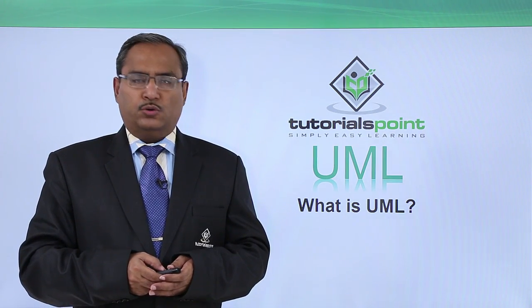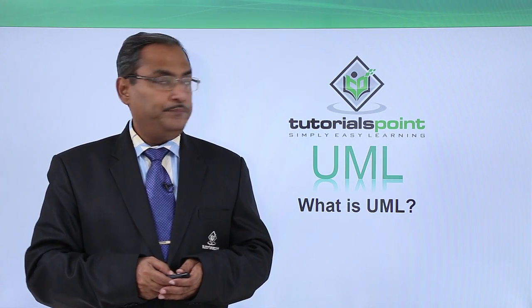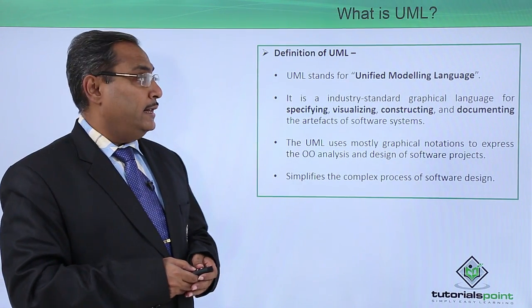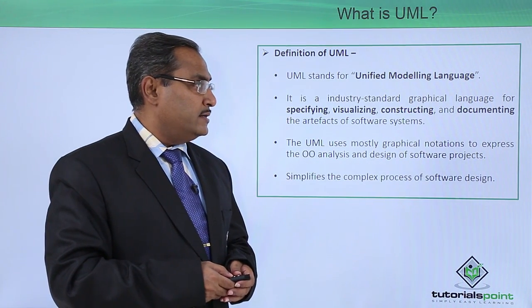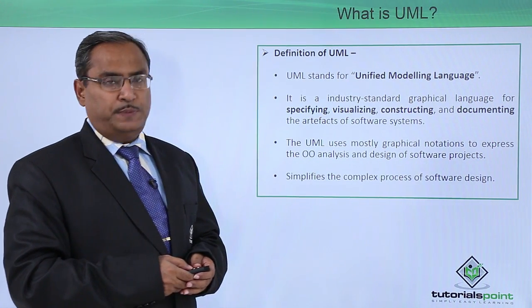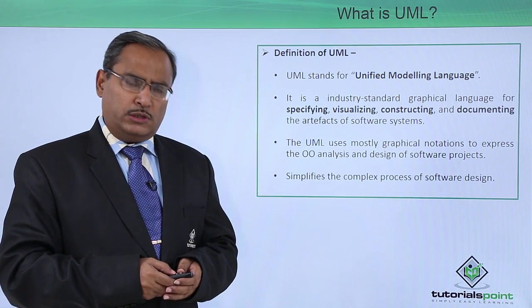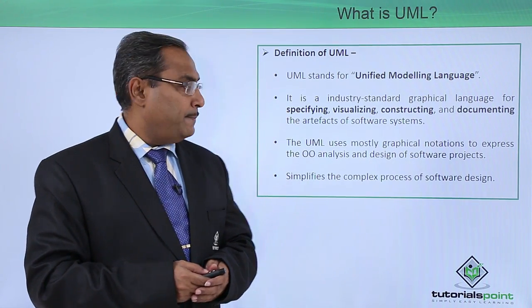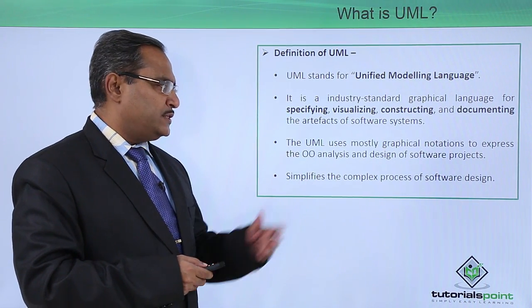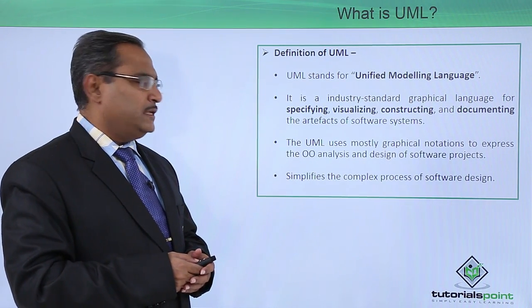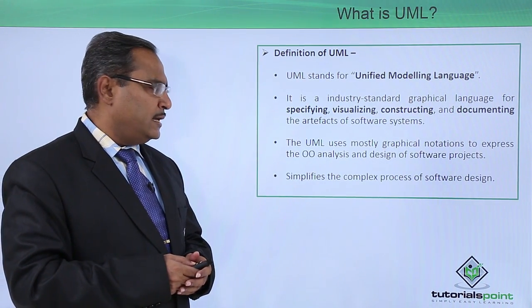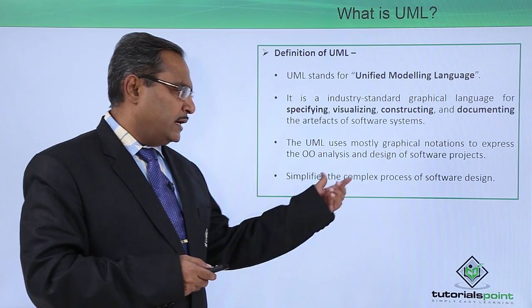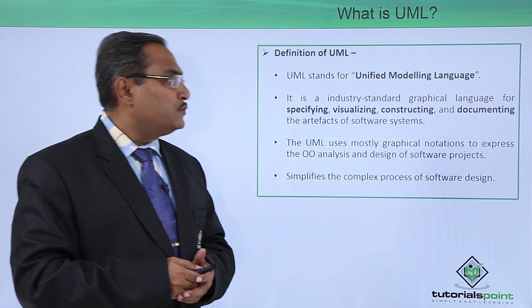What is UML? UML stands for Unified Modeling Language. It is an industry standard graphical language for specifying, visualizing, constructing, and documenting the artifacts of a software system. UML uses mostly graphical notations to express the object-oriented analysis and object-oriented design of software projects, and simplifies the complex process of software design.